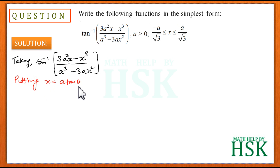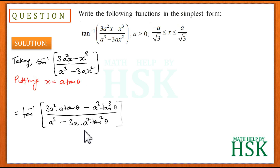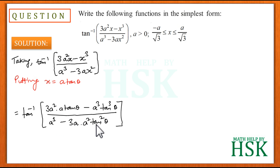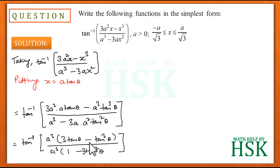We use x equal to a tan theta because placing it in the expression gives a cube in all terms of numerator and denominator, simplifying the expression. Substituting x equal to a tan theta, the numerator becomes 3a squared times a tan theta minus a cubed tan cubed theta, and the denominator becomes a cubed minus 3a times a squared tan squared theta. Taking a cubed common from both, I get tan inverse of a cubed times (3 tan theta minus tan cubed theta) over a cubed times (1 minus 3 tan squared theta).